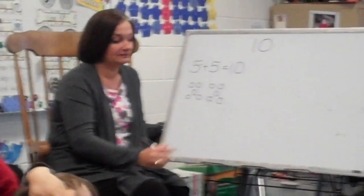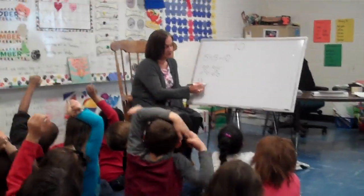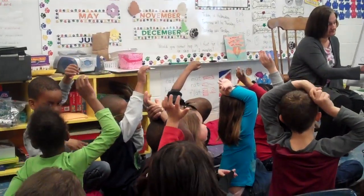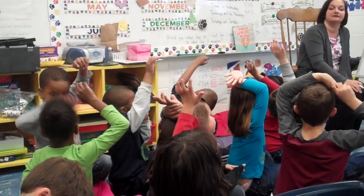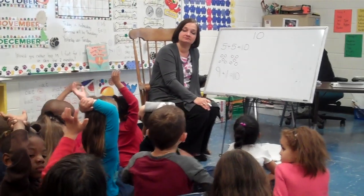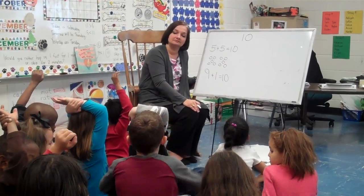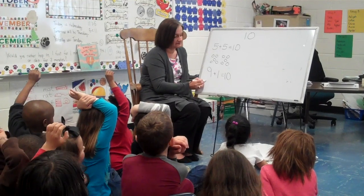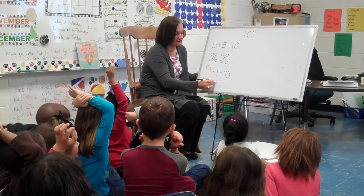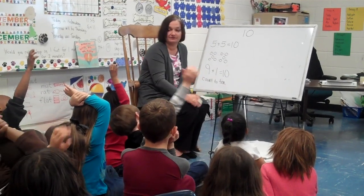9 plus 1 is 10. Very good. A set of 9 plus 1 more is going to give me 10. Exactly, very good. Dale — when you get 5, you can count to 10. So that's another way — something I can do with the number 10. I can count to 10. Very good.